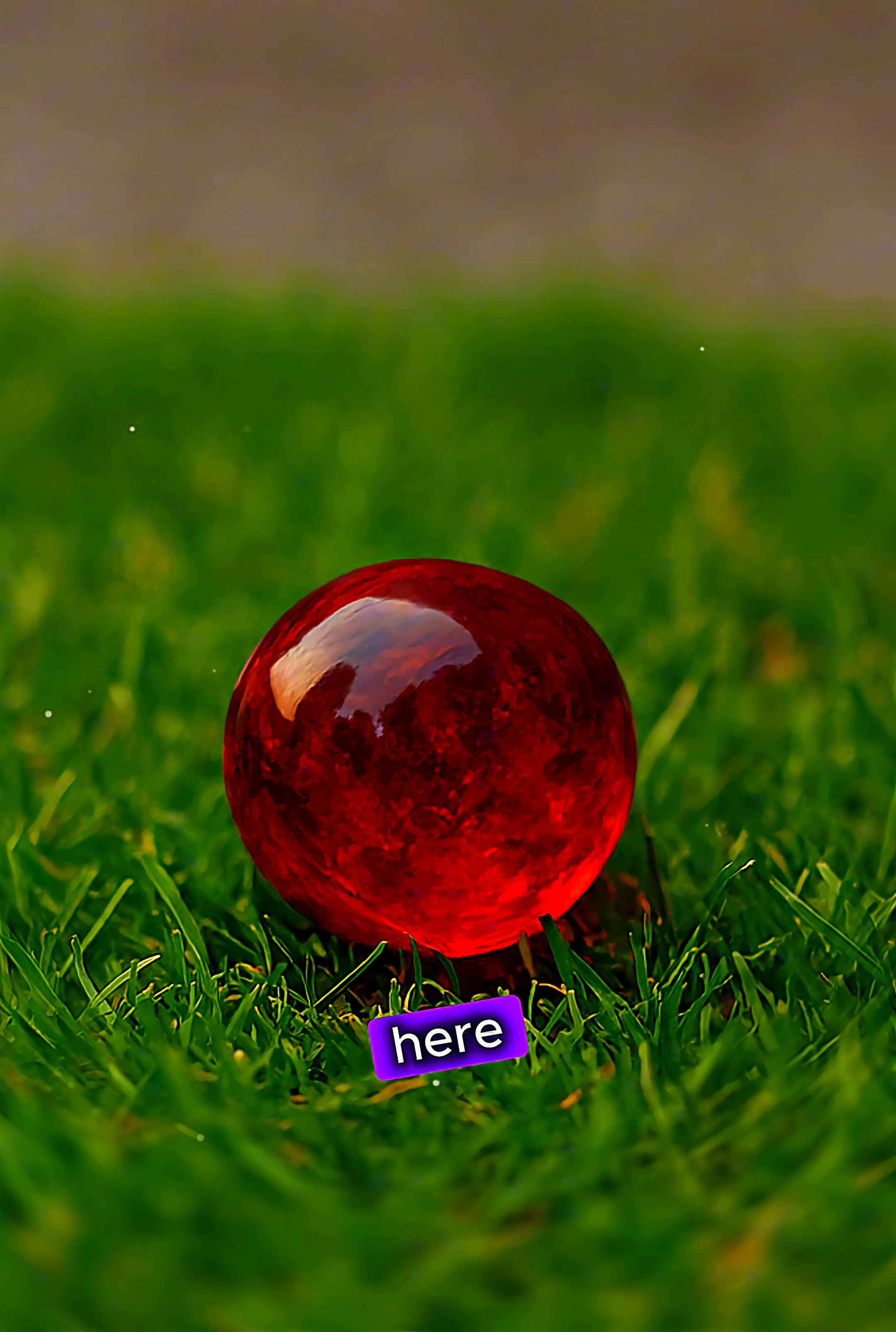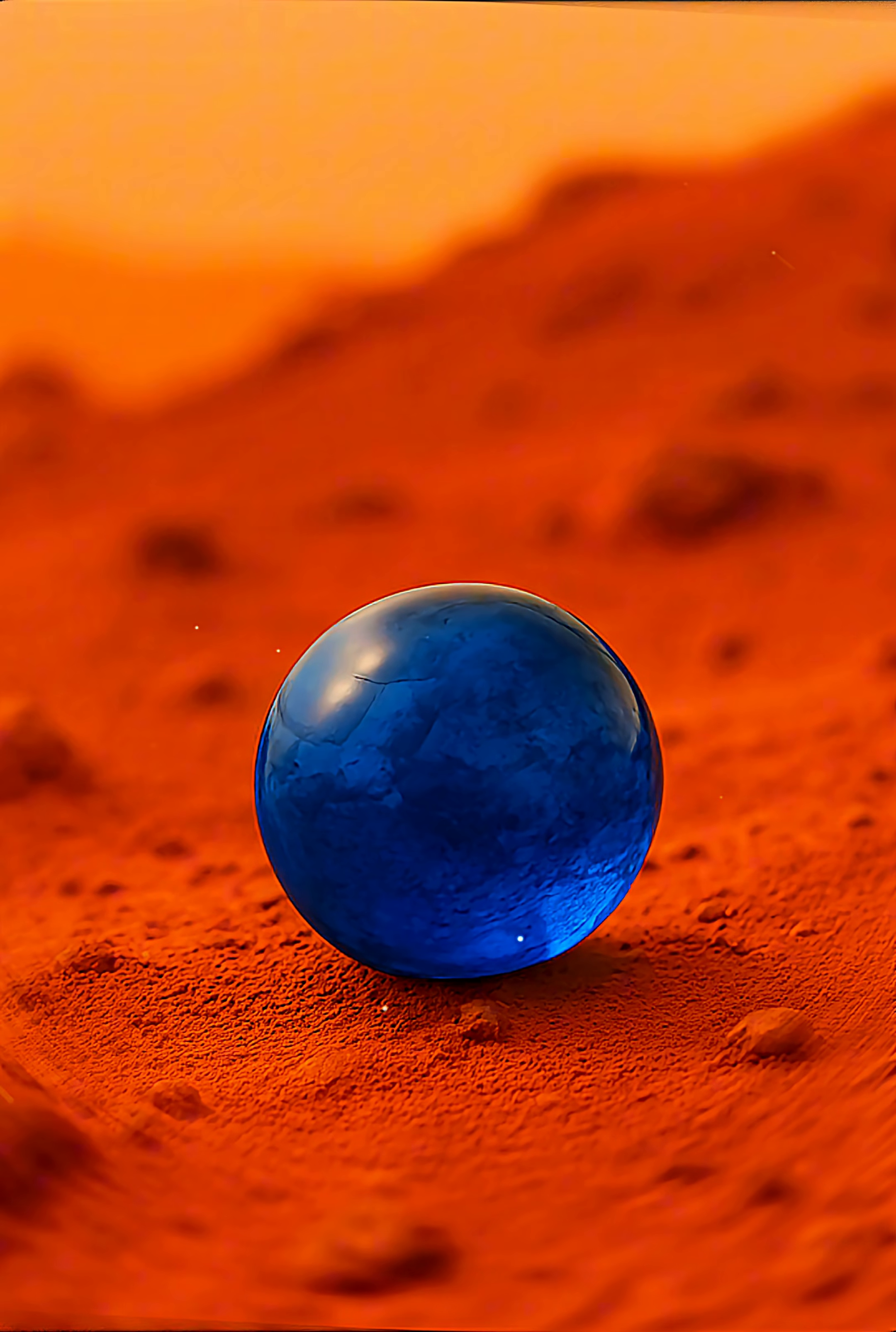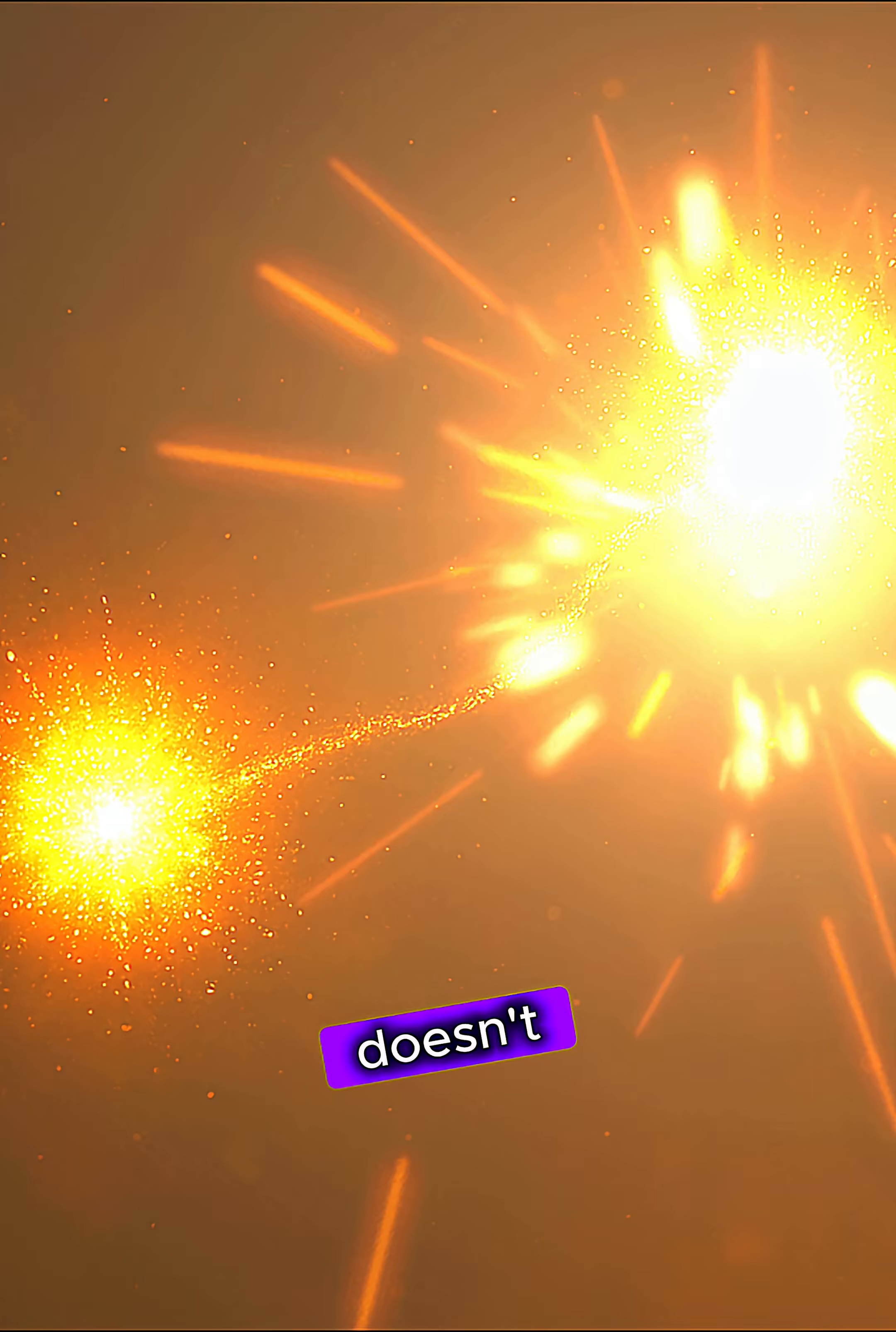If you change one marble here on Earth, the other one on Mars changes instantly. That's basically quantum entanglement, when two particles become so deeply linked that distance doesn't matter.